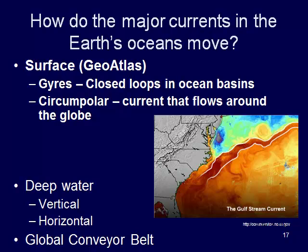The first thing we're going to talk about are surface currents, and we're going to use the GeoAtlas program that Frank has let us use for this course to explore those surface currents. We have two different things: gyres, which are closed loops in an ocean basin, and circumpolar currents that flow around the globe. And then we have these small spin-offs that happen with those gyres.